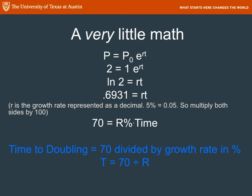To calculate doubling time, we plug in 2 for the current population and 1 for the initial — that doubles it. We take the natural log of 2, which is 0.69, so 0.6931 equals the rate times the time. The rate is written as a decimal, so 5% is 0.05. Multiplying both sides by 100 gives us 70 equals rate times time. So doubling time is very simply 70 divided by the rate of change. That's a really simple equation — I suggest you remember it.